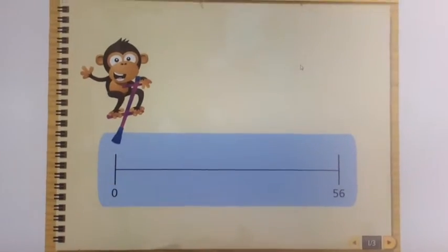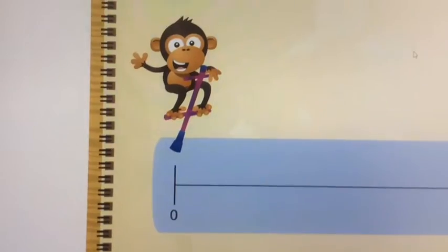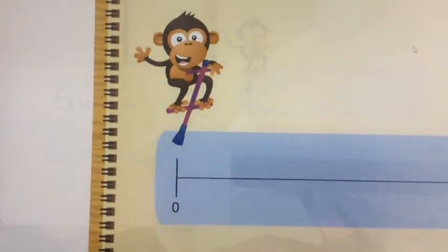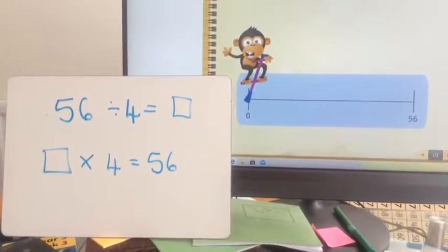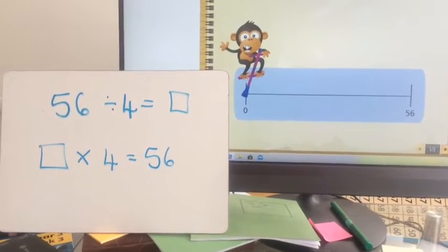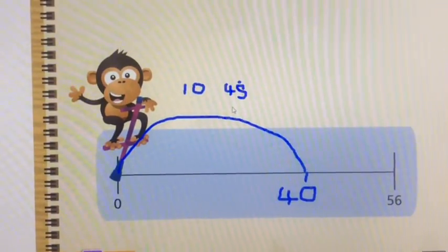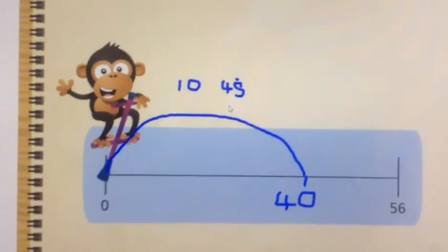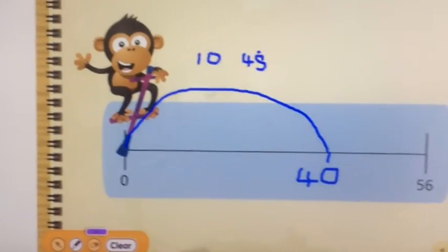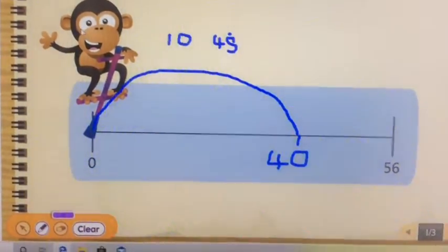Today Chunky Chimp is going to help us. He likes to do a big jump first, remember, then the small jump. We know there's going to be more than ten jumps of four in 56 because ten times four is 40. Now I've recorded that on my number line. He's going to jump the big jump, ten fours, all the way to 40.